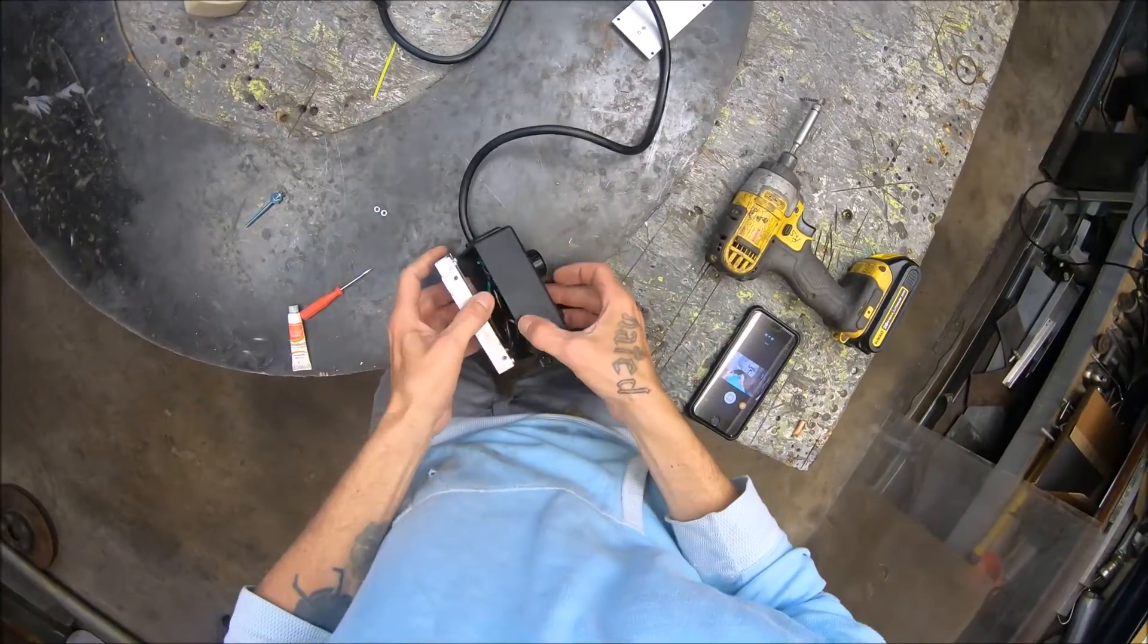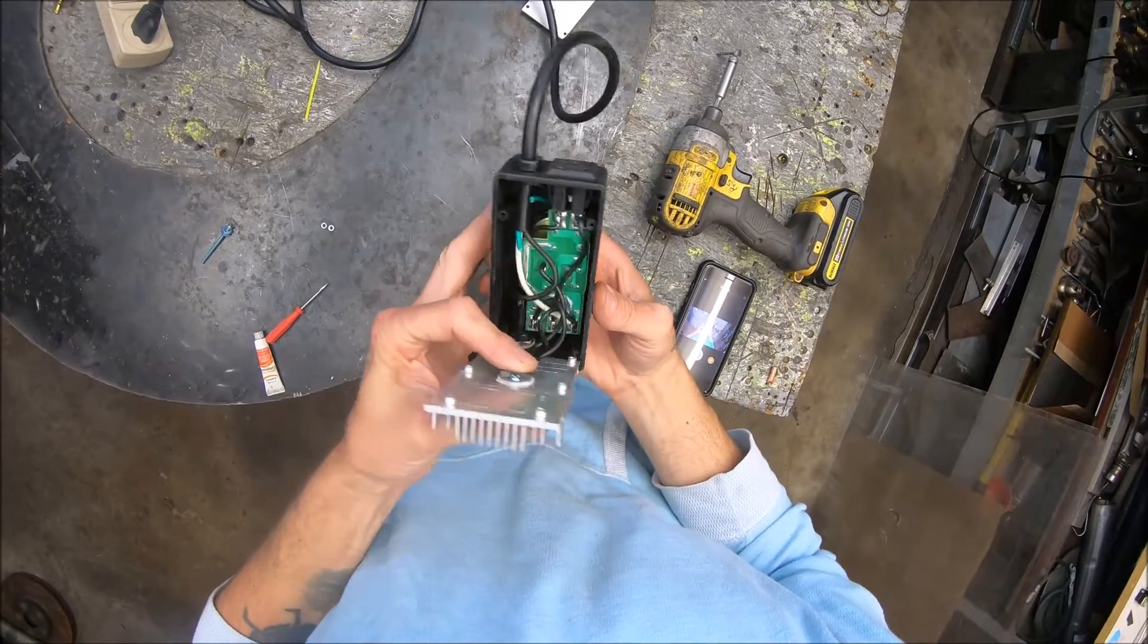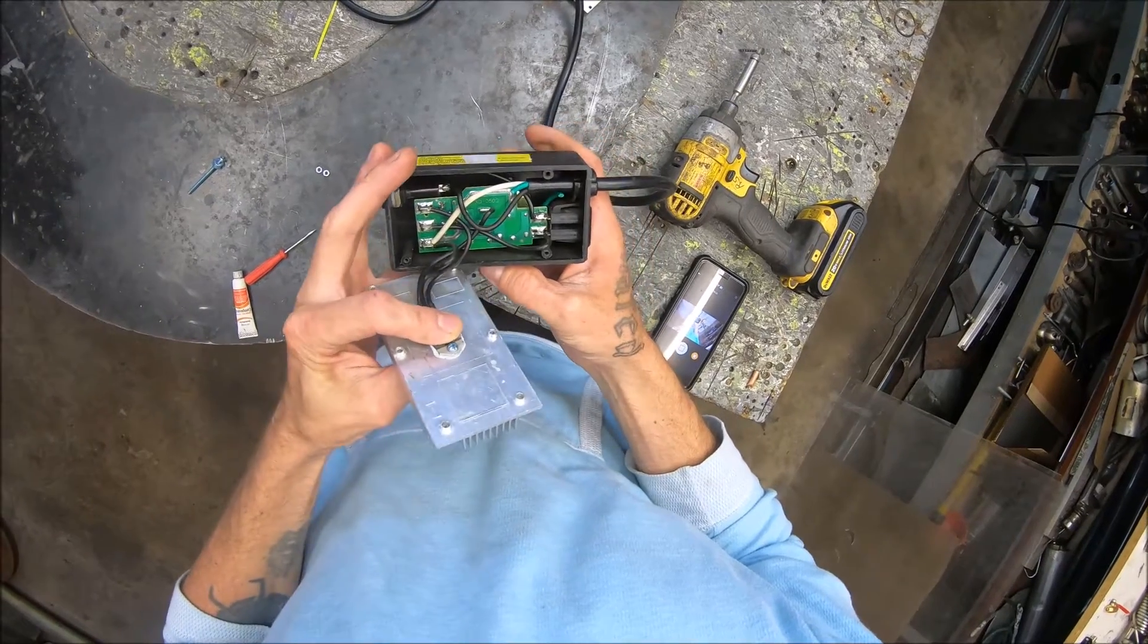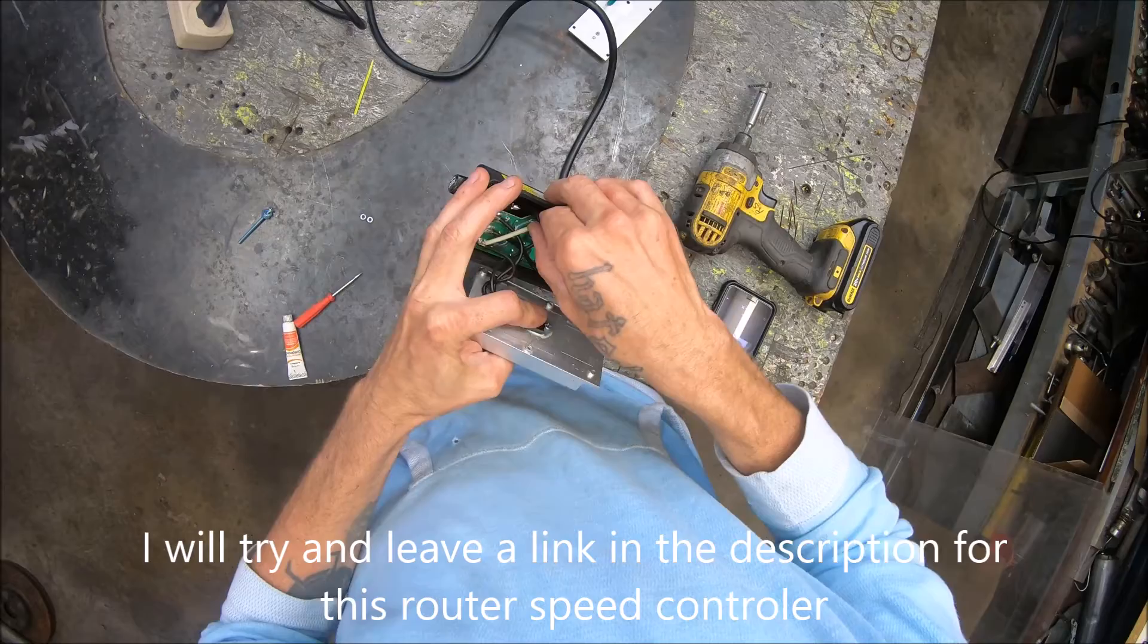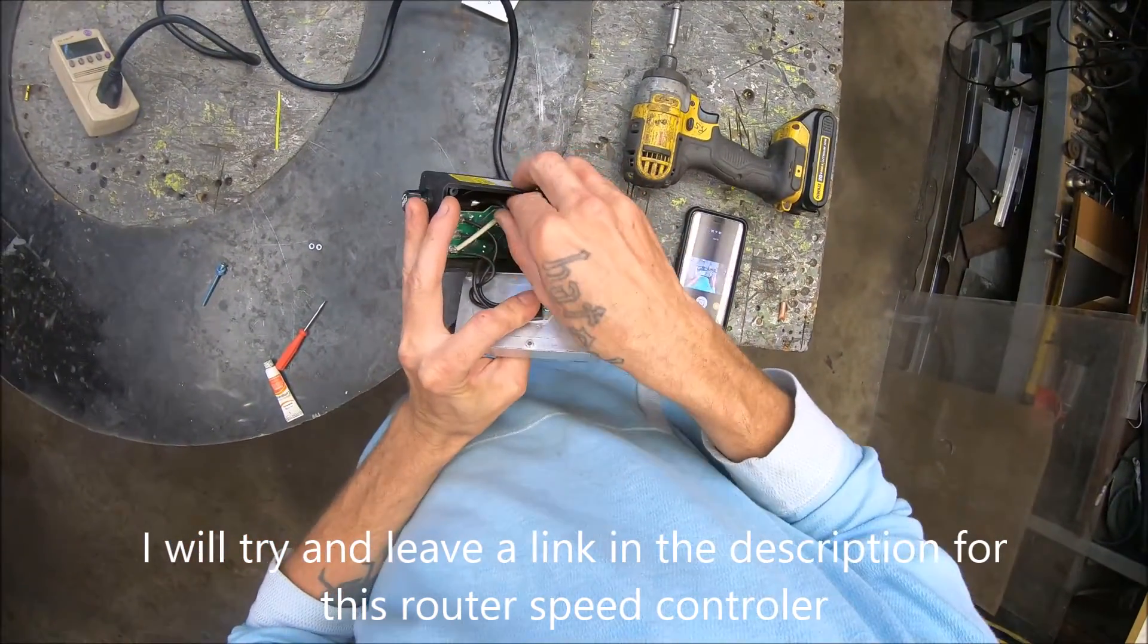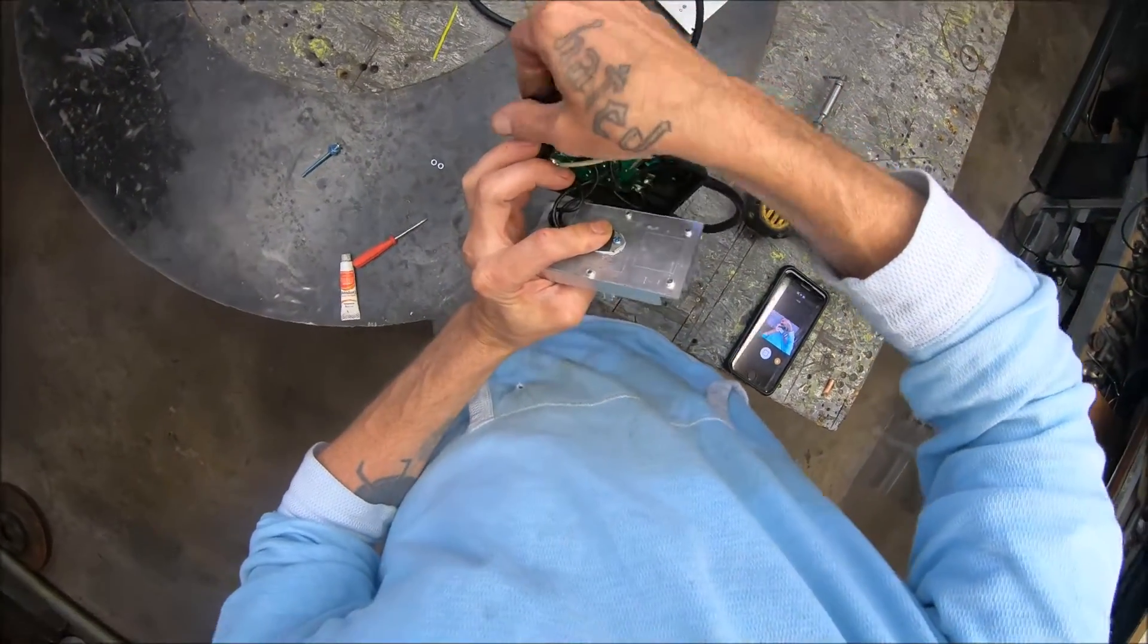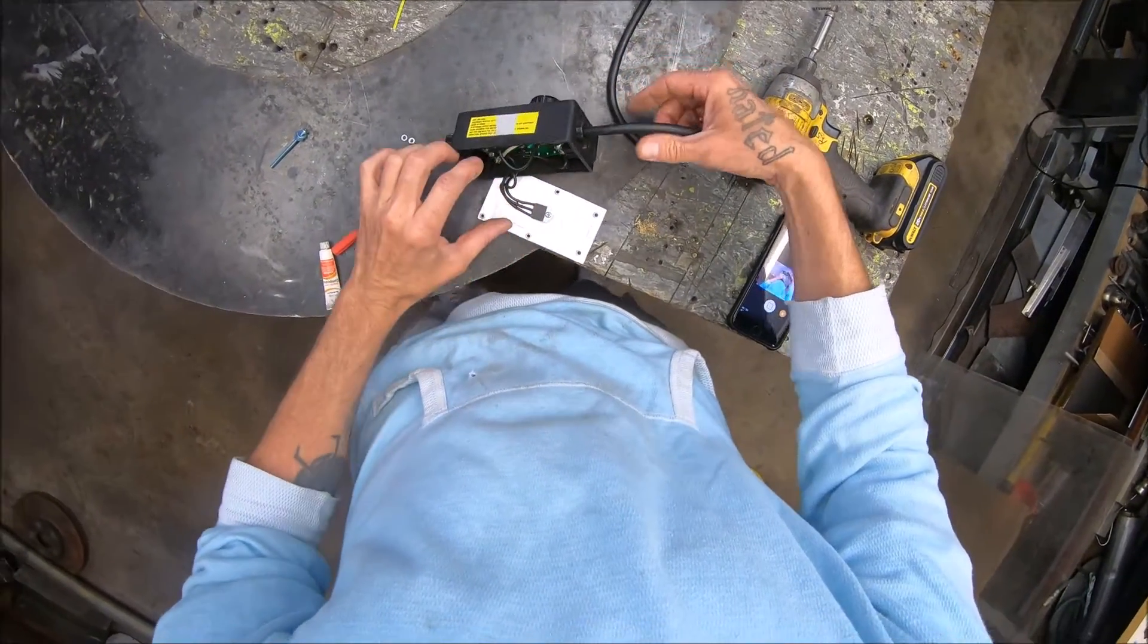I almost forgot to mention one thing about this mod guys. When you go to buy one of these you're going to want to bypass the fuse, which I have not done yet. I just remembered that. Before we close this up, we got to take these two wires and connect them together because you're not going to want to be jacking around with this fuse - it's a 15 amp fuse and sometimes you're going to go a little bit above that.